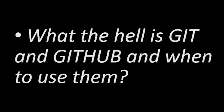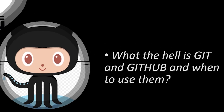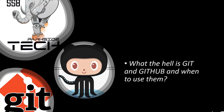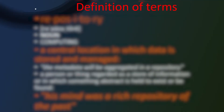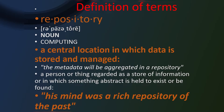So, what the hell is Git and GitHub, and when do we use it? And what does it have to do with software development? Well, before I do that, let me give you a definition of terms, because I don't want to be using terms and you get lost right off the bat. I'll be using the term repository, which here stands for a general location for which data is stored and managed.